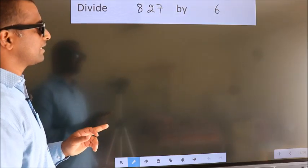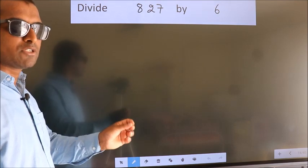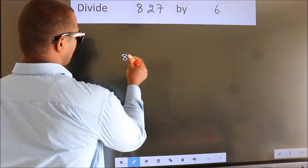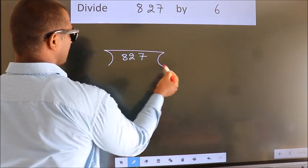Divide 8.27 by 6. To do this division, we should frame it in this way: 8.27 here, 6 here.